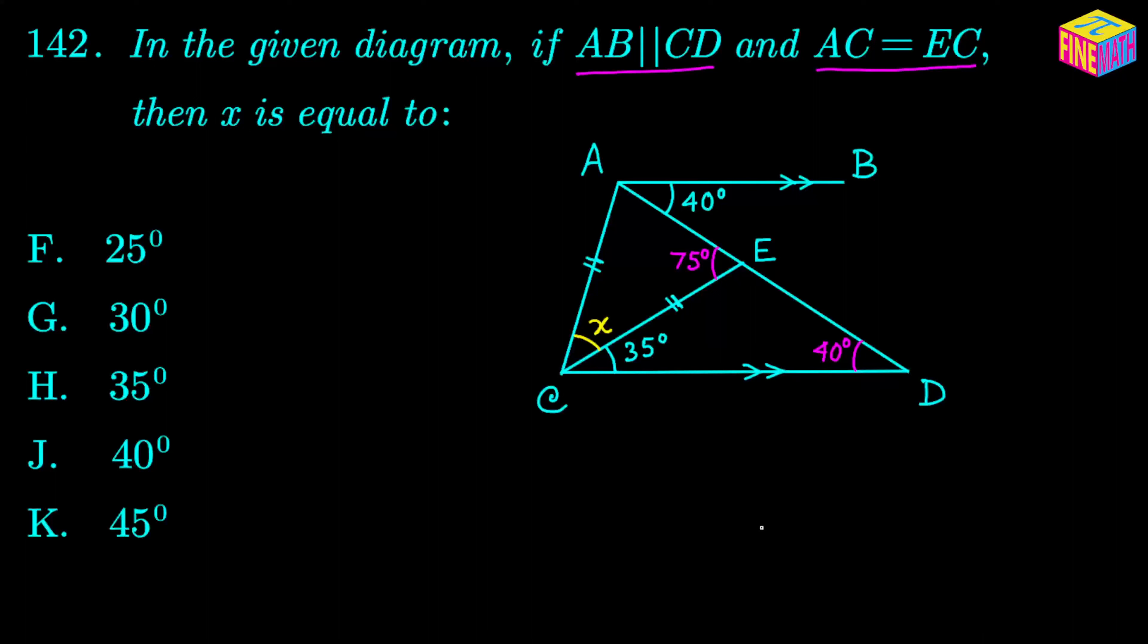Now let's look at the triangle ACE. Because AC is equal to EC, then this must be an isosceles triangle. So if angle AEC is equal to 75 degrees, then definitely angle CAE will also be 75 degrees.